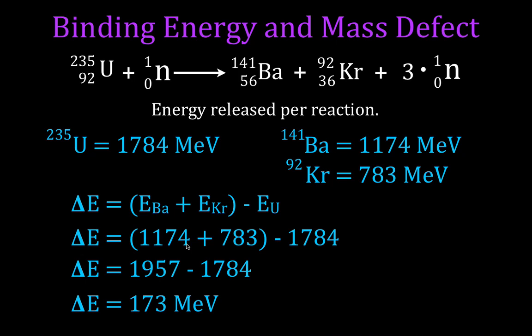That works out to 1957 minus 1784, so the difference in energy between the uranium and the barium-plus-krypton products is approximately 173 mega electron volts. That is the energy released per reaction in mega electron volts.